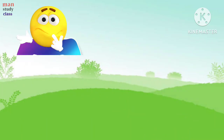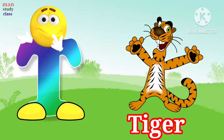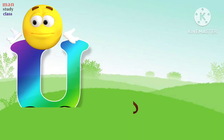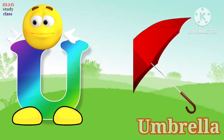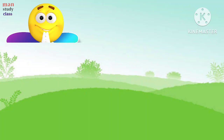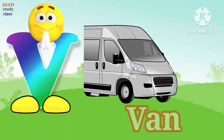T for tiger, tiger means baag. U for umbrella, umbrella means chhata.